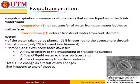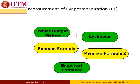Now we move to evapotranspiration. Evapotranspiration is the combination of evaporation and transpiration — transpiration comes from the cells of plants. How do we measure evapotranspiration? We can use the water budget method, equipment, and the Penman formula. We can also estimate ET using some empirical formulas. For our syllabus, questions may relate to the water budget method or the Penman formula.